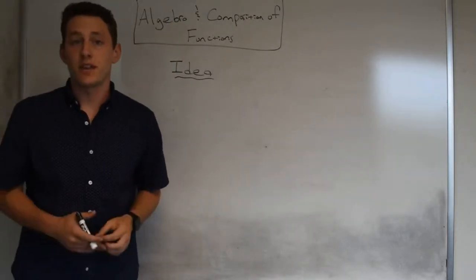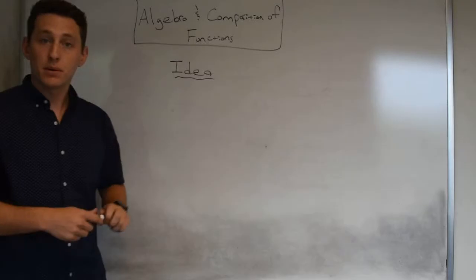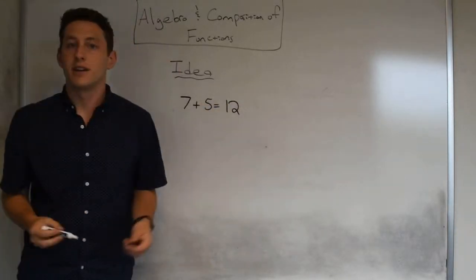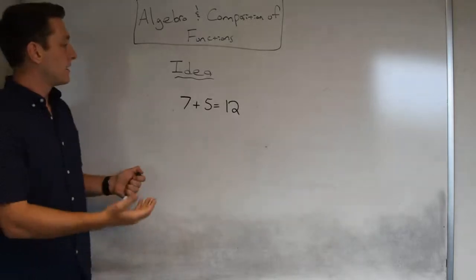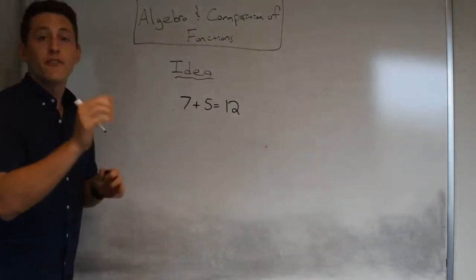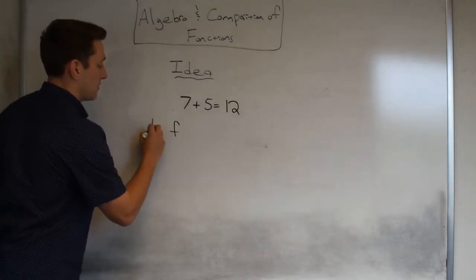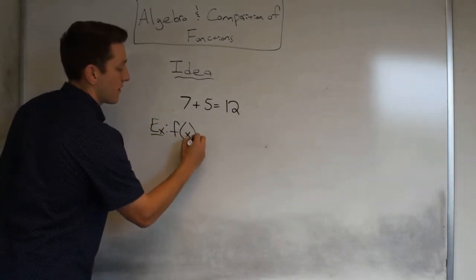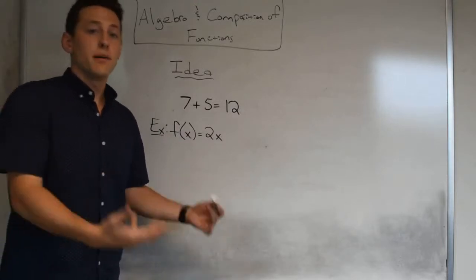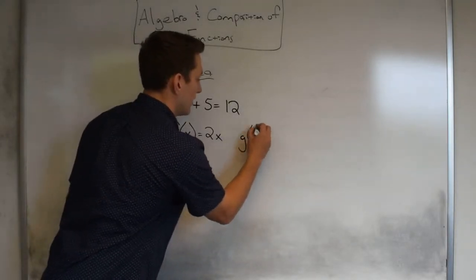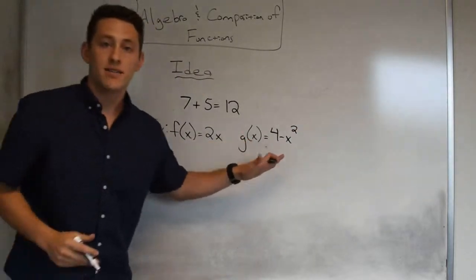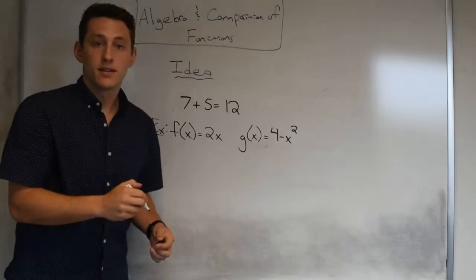The main idea behind the algebra of functions is relatively simple. When we think of algebra, we typically think of statements like seven plus five equals twelve — a number plus a number gives us a number. Now if we look at a function, say f(x) = 2x, when I plug in something for x I get a number. Similarly, g(x) = 4 minus x squared — again, plug in an x and get a number.